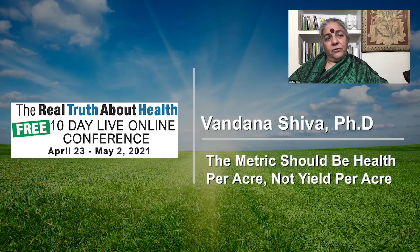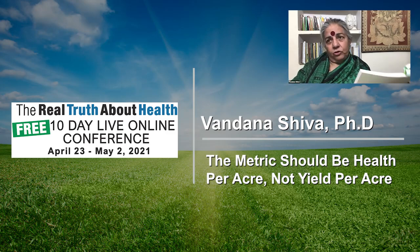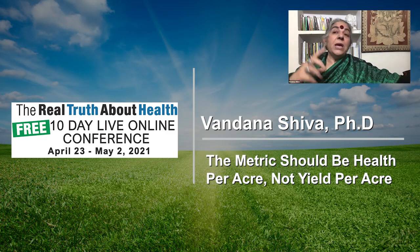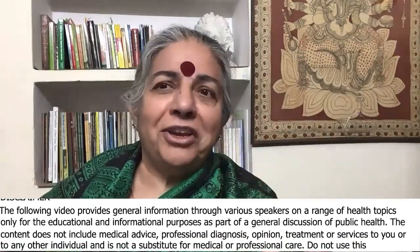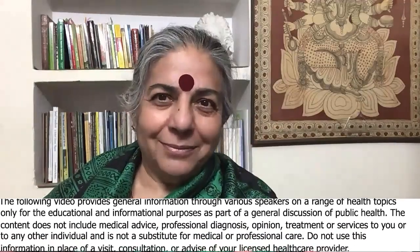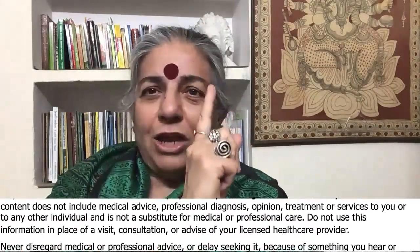The pseudo-productivity is located in a construct, a total fake construct called yield. We're always told we increase yield, but what does yield measure? Yield measures the commodity. And you could have destroyed a very rich farm with a lot of biodiversity and grown a monoculture.